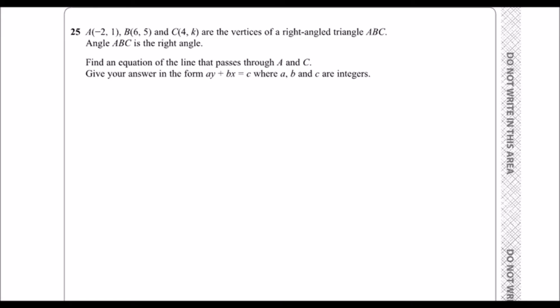Okay, we've got three vertices, so corners, of a right angle triangle, where angle ABC is the right angle. So I have a little sketch. We've got A, B, C. Angle ABC is the right angle. A is minus 2, 1. This definitely won't be drawn to scale. B is 6, 5, and C is 4 and K. We don't know what K is.